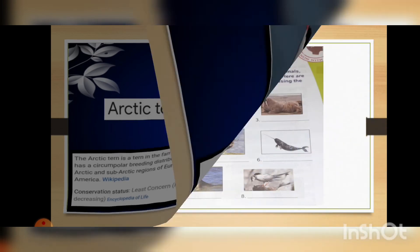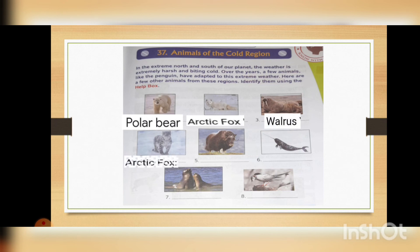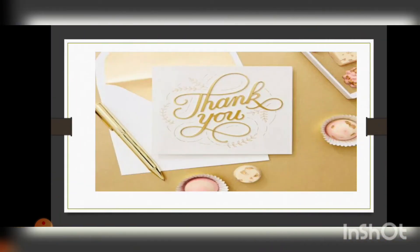Now we are coming to the exercises. Identify and find all the animals we have described. Number one is the polar bear, number two is the arctic fox, number three is the walrus, number four is the arctic fox, number five is the musk ox, number six is the narwhal, number seven is seals, and the last one is the arctic tern. With this we come to the end of our class. Thank you, students.